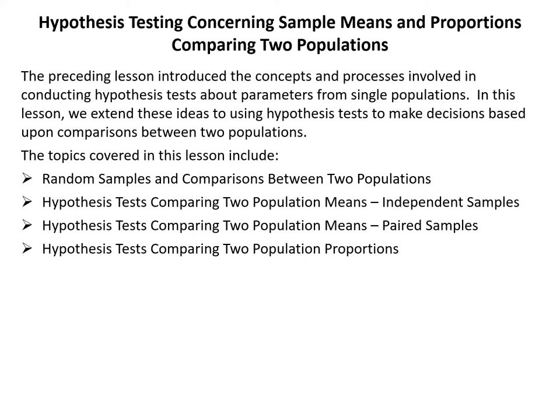The preceding lesson introduced the concepts and processes involved in conducting hypothesis tests about parameters from single populations. In this lesson, we extend these ideas to using hypothesis tests to make decisions based upon comparisons between two populations. The topics covered include random samples and comparisons between two populations, hypothesis tests comparing two population means for independent and paired samples, and hypothesis tests comparing two population proportions.